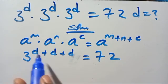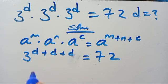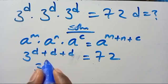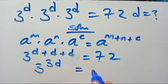So D plus D plus D will give us 3D. From here we have 3 to the power of 3D equals 72.